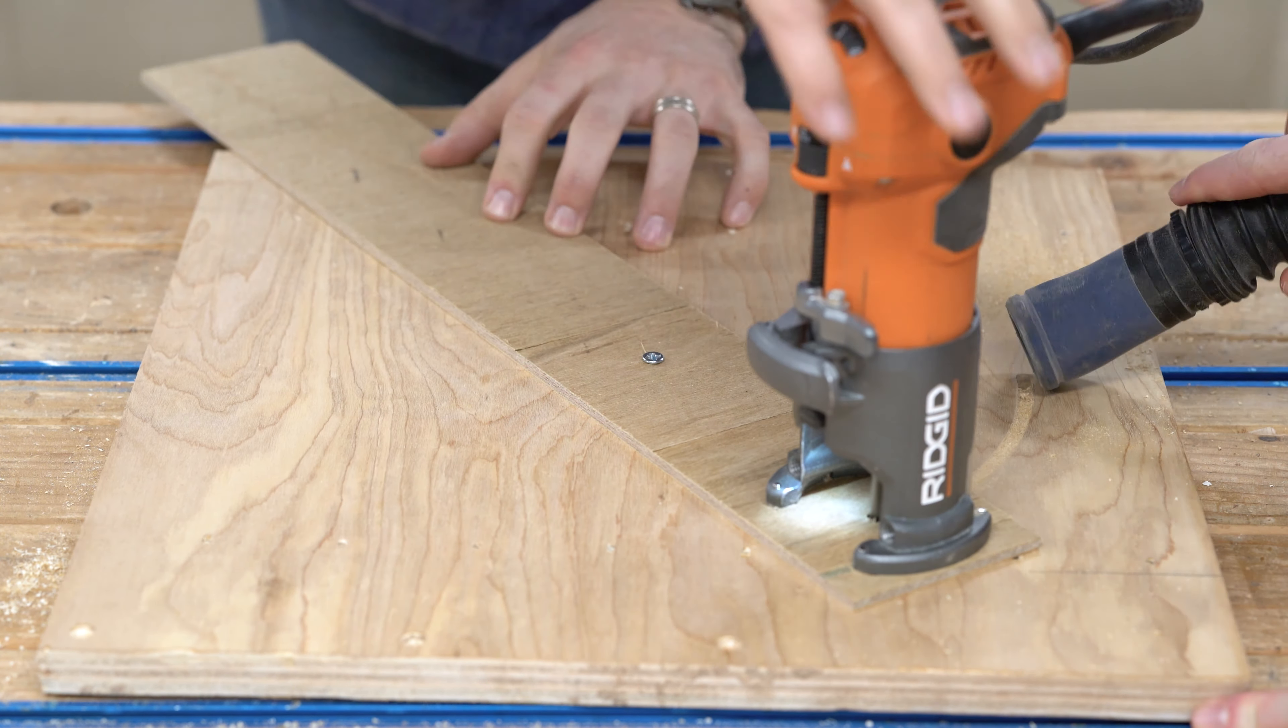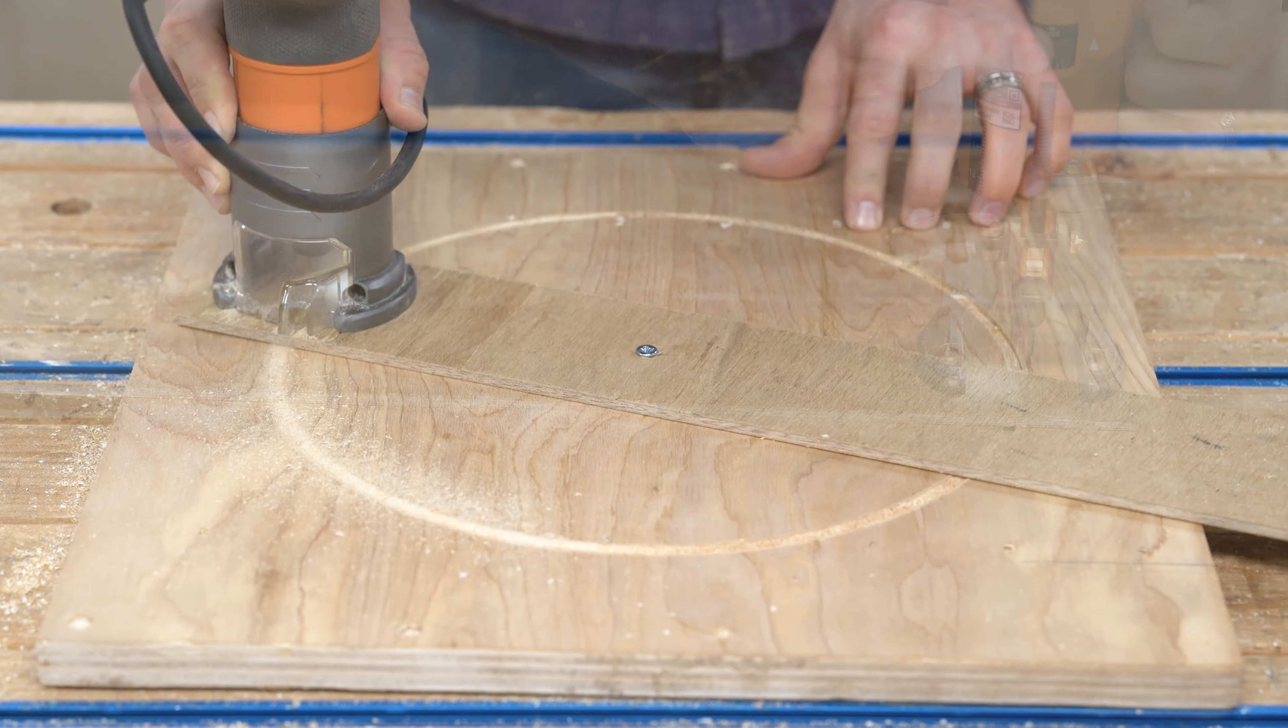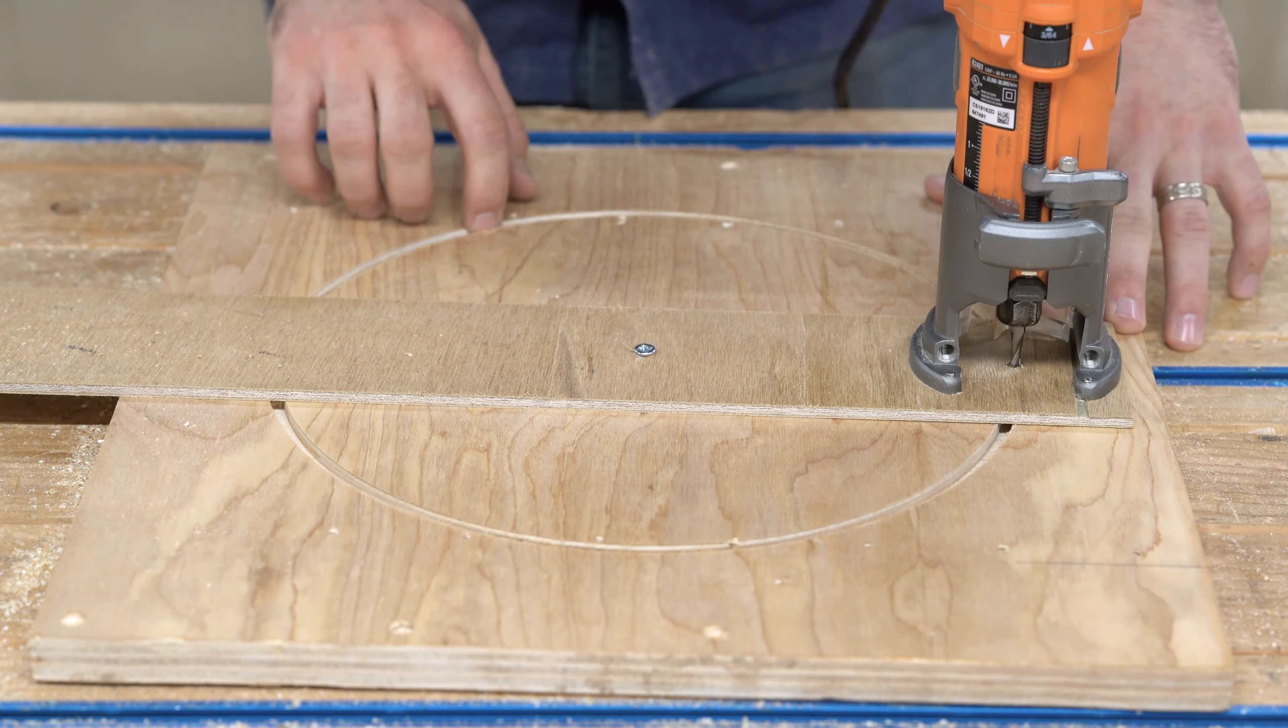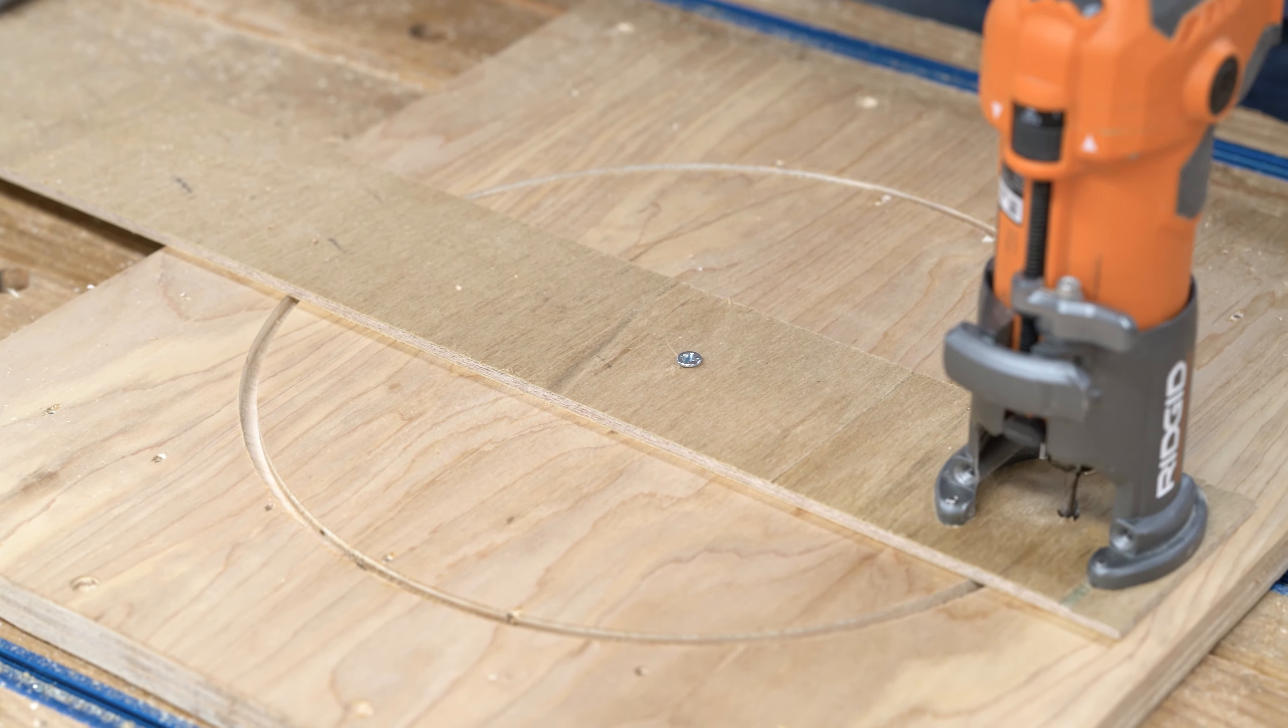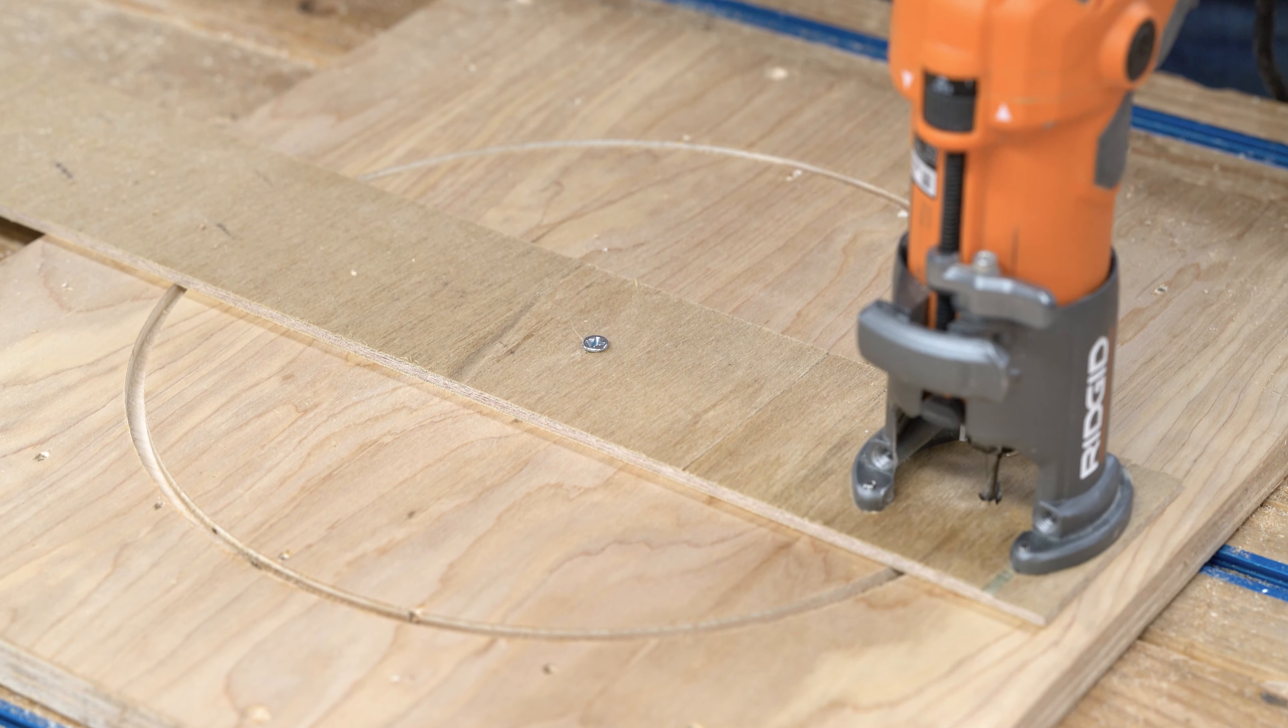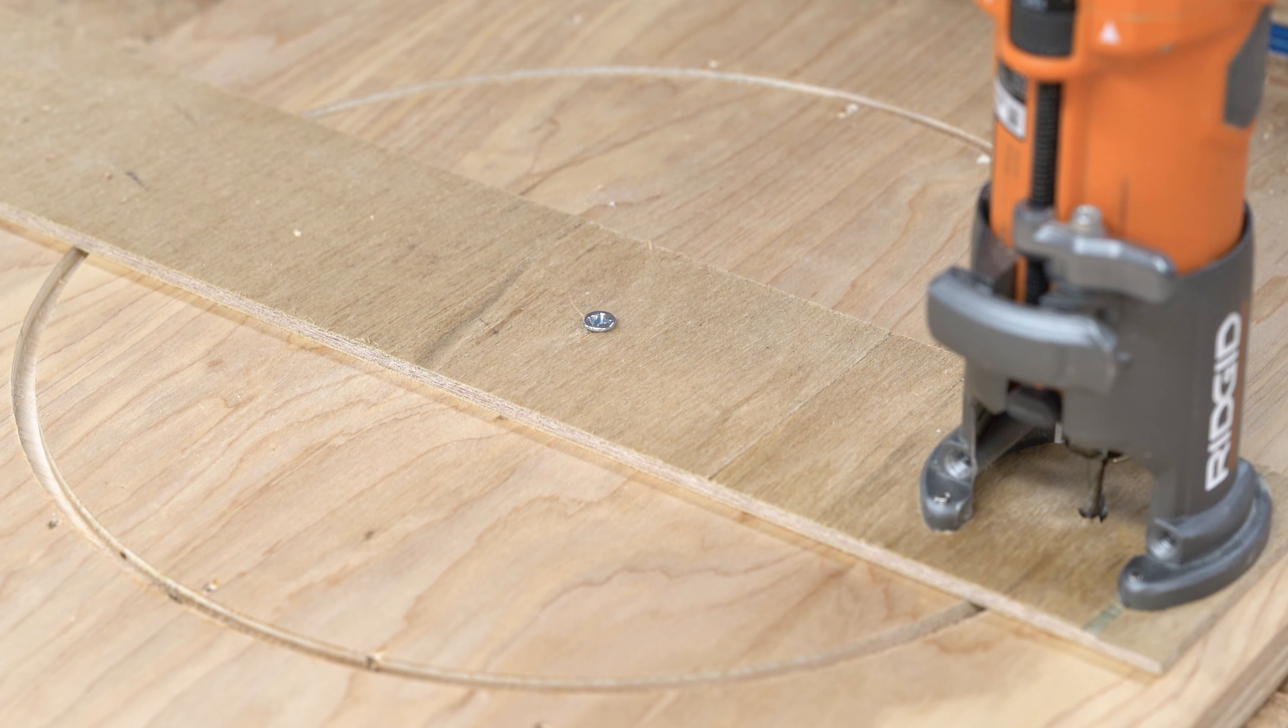I like to vacuum up the dust after every pass, but that's just me. Keep lowering the bit and making passes until you have somewhere between a quarter and a half inch left to go. Now this is where you have a choice to make. You can keep going until you're all the way through—just make sure the router doesn't jump as you cut the final bit of wood away.